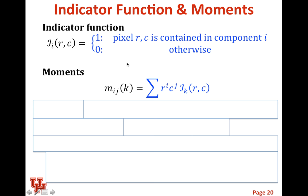The next concept we need is the moment. The moment is a mathematical operation on the image where we talk about the moment subscript ij of component k. We use our indicator function to only highlight component k, and we multiply — taking the row to the ith power and the column to the jth power. These tell us some characteristics of the image. It turns out if you have all the moments from i equals zero to infinity and j equals zero to infinity, it's enough to reconstruct the object.